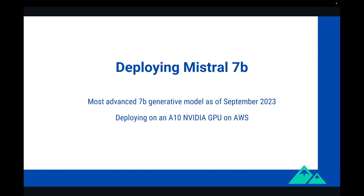Mistral 7B requires at least 14GB of virtual memory, and more in case of a large context size. So we are going to deploy it on an A10 NVIDIA GPU on AWS, as this GPU has 24GB of virtual memory and is quite cost-effective.